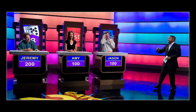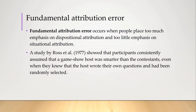In 1977, Lee Ross and colleagues conducted a study which randomly assigned participants to three roles: game show host, contestants, and the audience. Participants were told that the game show host could design their own questions. After watching the show, the audience was asked to determine the intelligence of the people in the show, and they consistently attributed higher intelligence to the host, even though they knew that the host obviously knew the answers to their own questions and that they had all been randomly assigned.